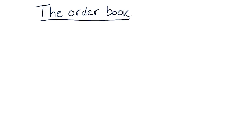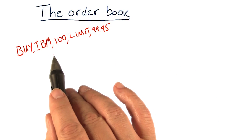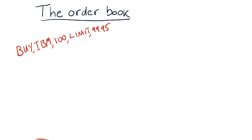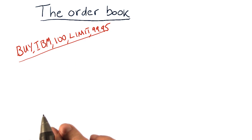A key construct at most exchanges is something called the order book. Each exchange keeps an order book for every stock that they buy or sell. Here's how it works. Let's suppose you've just issued an order to buy 100 shares of IBM with a limit price of $99.95. And let's suppose this arrives at the New York Stock Exchange, and so far today nobody's put in any orders. So your order is the first one, and they'll use it as the basis to start building their order book.